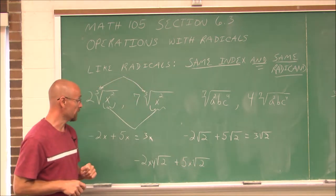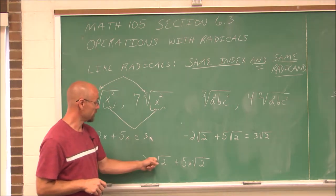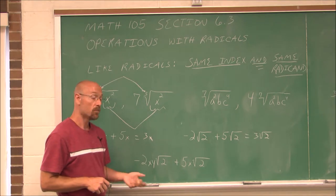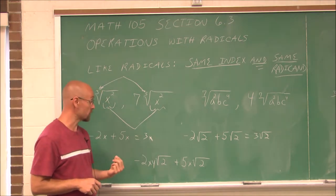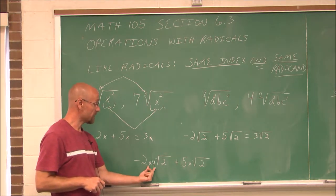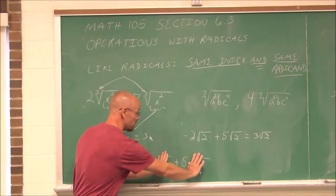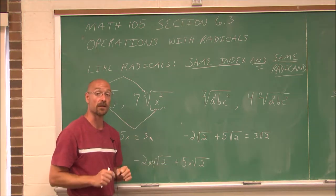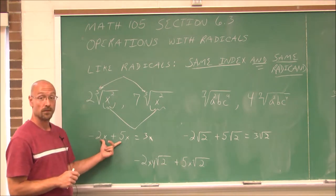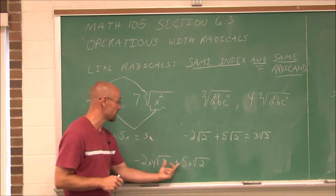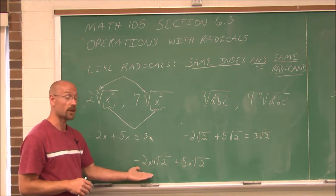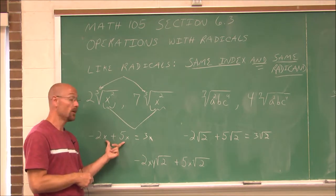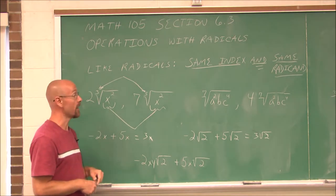What about this one? I look at the index and say they're both square roots, and they both have a radicand of 2. But we also have to consider what's outside of them — here I have x and y, here I only have x. If we just for a moment imagine that square root of 2 not being there, this determines that they're not like terms. So we have to identify not just the radicals, but we also have to recall other like terms where we have variables.